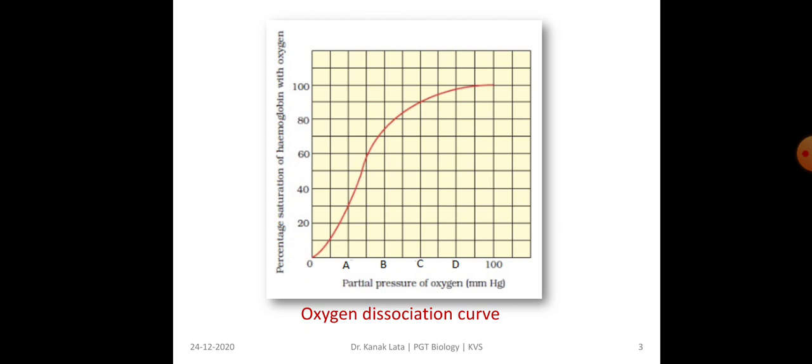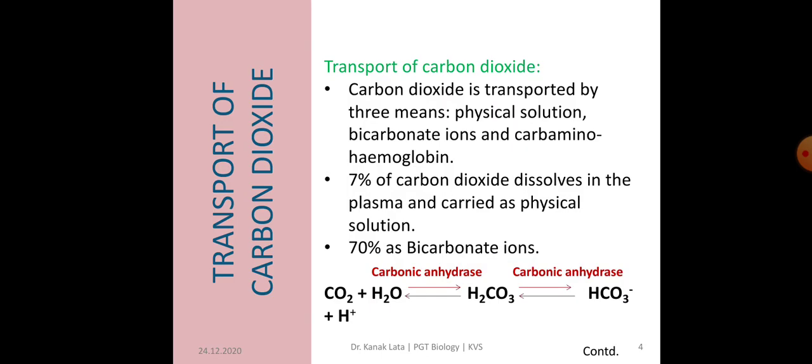This is the graphical representation of oxygen dissociation curve. From the graph, it is clear that as partial pressure of oxygen increases, there is progressive increase in the percentage of hemoglobin that is bound with oxygen.